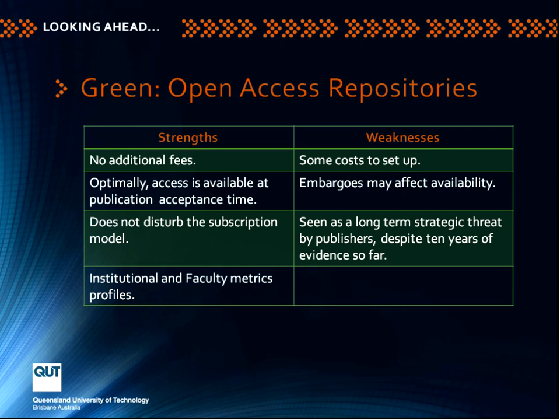In the case of the green road: there are no additional fees or revenue required; it doesn't disturb the subscription model; access is preferably available at the time of publication; and using an institutional or discipline repository gives interesting possibilities for metrics about how research is being received. Of course it costs some money to set up. The current discussion about embargoes on material in repositories sought by subscription publishers is an important constraint. And although there's no evidence that subscriptions get affected, there's no doubt some publishers have seen the green road as a long-term issue for them.